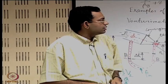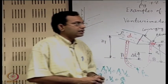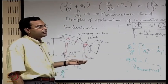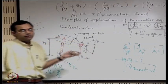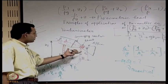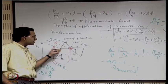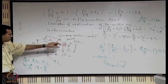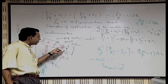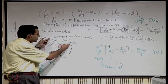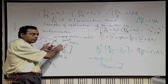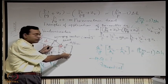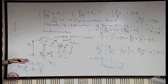In our previous lecture, we were discussing the Venturimeter and we will continue with that as an example. The purpose of the Venturimeter was to measure the volume flow rate through a pipe. For that, we utilize an arrangement where you have a converging section, sometimes called a converging cone, then a throat where the area of cross section is at a minimum, and then a diverging section — this part has to fit back with the pipe.